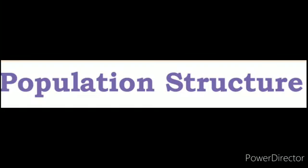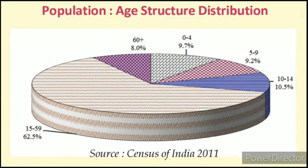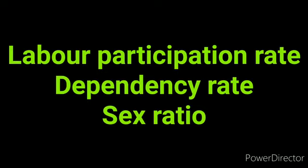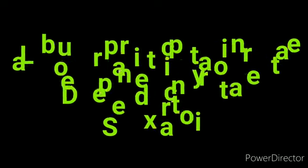The last quantitative feature is the structure of population. Age structure and sex structure are the classifications of population. For example, classification is done in age groups like 0 to 14, 15 to 59, and 60 and above. Three important factors here are: participation rate, dependency ratio, and sex ratio.